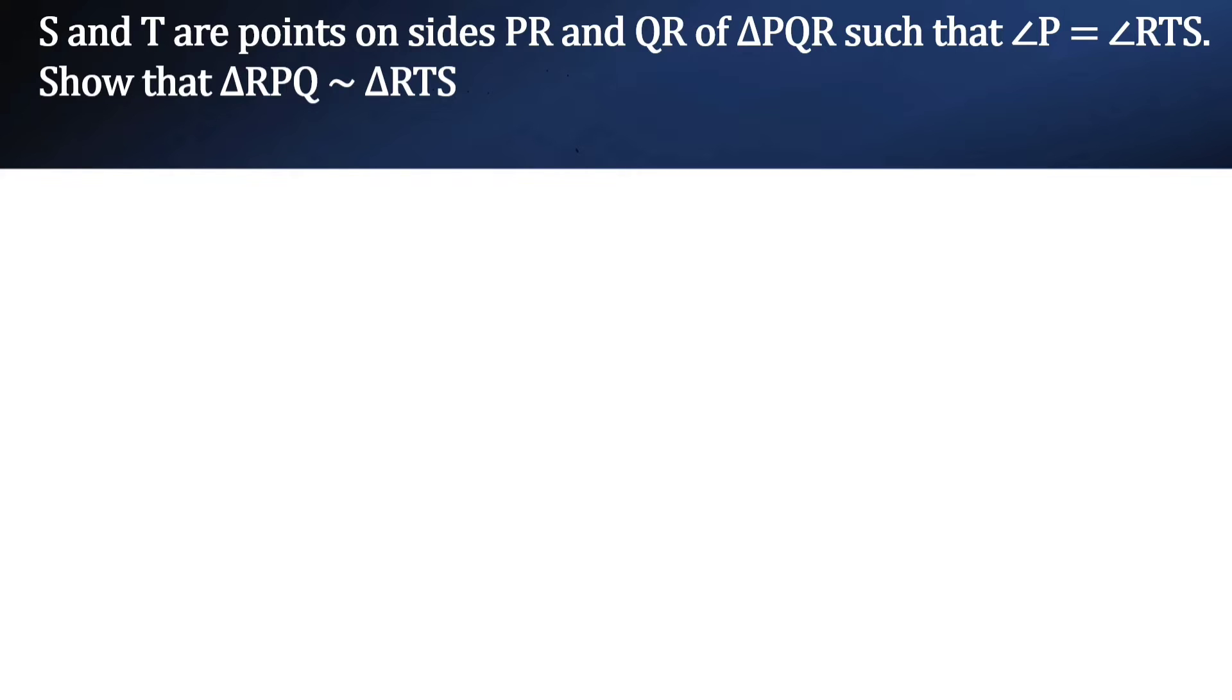Now we are not given a figure, so let us draw the figure. Let us first have triangle PQR. Here S is the point on PR. T is the point on QR.